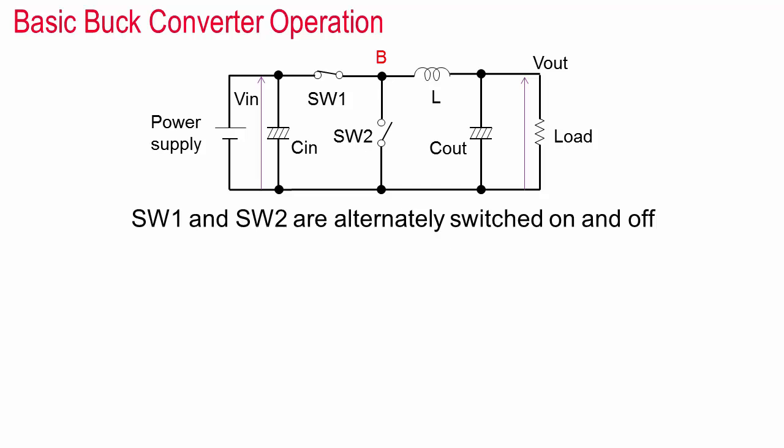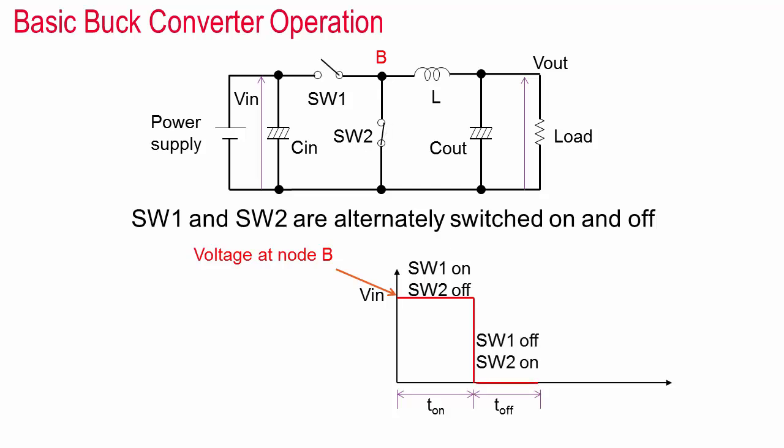DC to DC converters use FETs operating as switches or a switch and a diode controlled by a clock to convert a DC input voltage to some lower or higher DC voltage needed by other circuits, typically ICs. In this simplified block diagram of a buck converter, switches one and two alternately open and close depending on the clock which has an adjustable duty cycle. So the voltage at node B toggles between V in and zero as shown. In reality node B will not be these ideal values due to voltage drops across the switches.